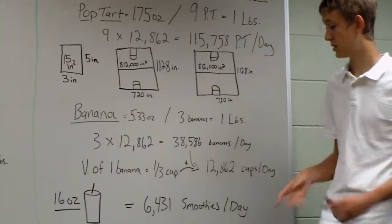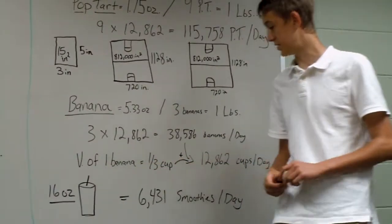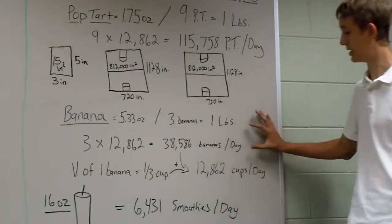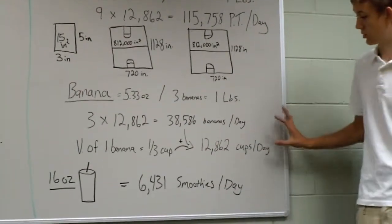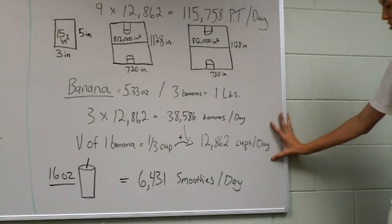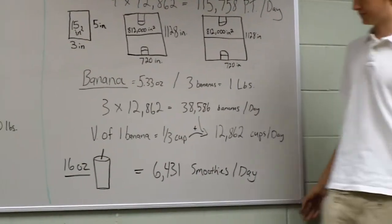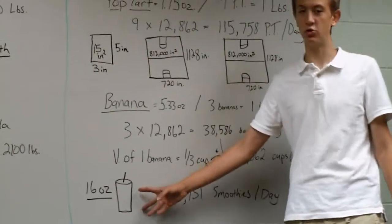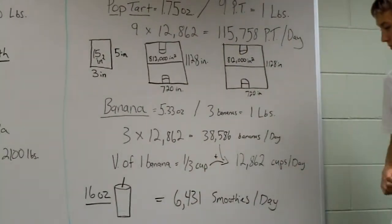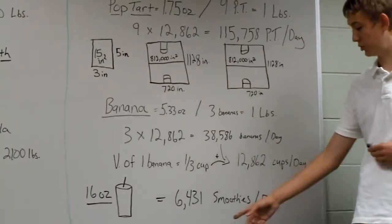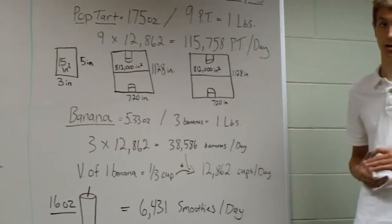Now let's bring volume to this. The volume of one banana is about one-third cup. So one-third cup multiplied by the bananas per day is about 12,862 cups of banana per day. Now the average smoothie has about two cups in it. So that would be 6,431 smoothies per day of banana puree.